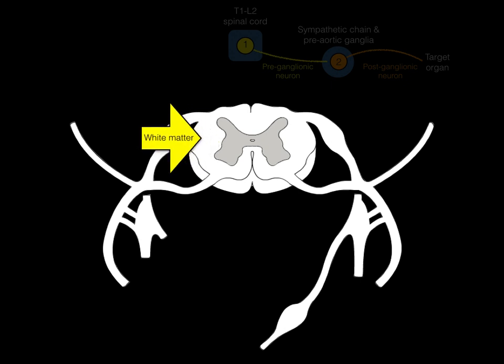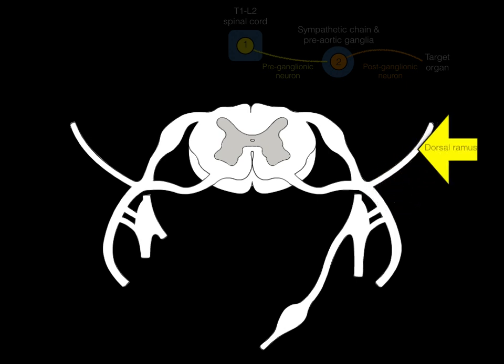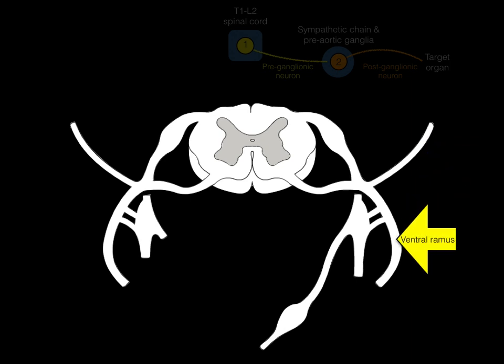We also have the dorsal root with the dorsal root ganglion for sensory neurons going into the dorsal horn, a ventral root for motor neurons coming out, and the spinal nerve trunk where those roots come together for two-way motor and sensory traffic. The dorsal ramus takes motor signals to the deep back muscles and sensory from the skin between the shoulder blades, and the ventral ramus goes to all other trunk and limb muscles and skin.